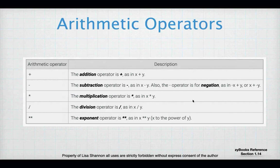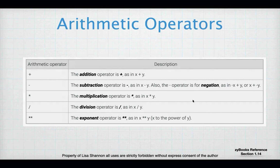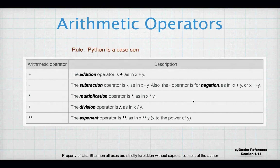For arithmetic operators — if you've done a little bit of algebra, you've seen these before. The only different operator is the double star, which is the exponent. We have addition, subtraction, multiplication, division, exponent, and modulo. We'll also use the floor operator next week. Parentheses work the same in Python math as in algebra, and those rules are all the same.